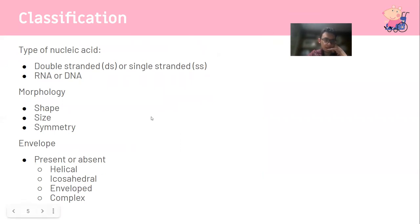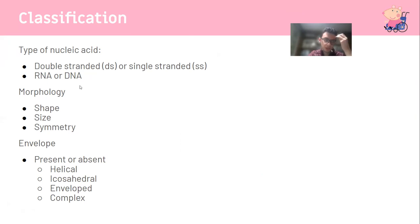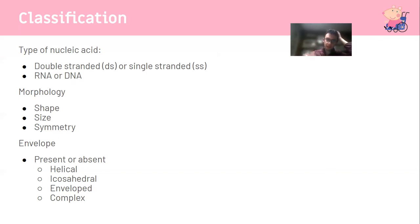The classification of a virus depends on its nucleic acid - it can be double-stranded or single-stranded, RNA or DNA, and positive or negative sense. Positive sense means the viral RNA can be immediately and directly transcribed by the cell, whereas negative sense RNA needs to be converted into a form the cell can recognize before it can be replicated.